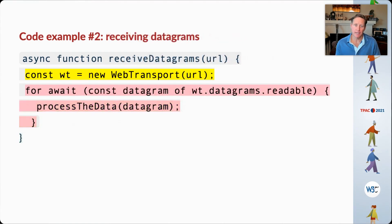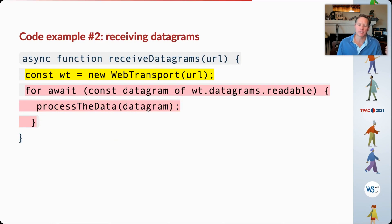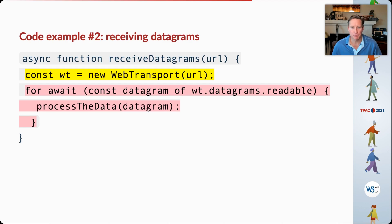On the receiving side, it's even simpler. I instantiate my Web Transport connection, and then in the pink block, I access the readable object on the datagrams interface of the Web Transport instance, and I'm simply able to process my datagrams as they are received.